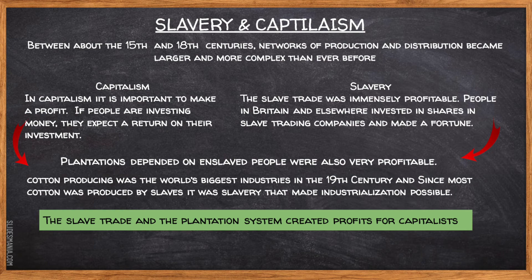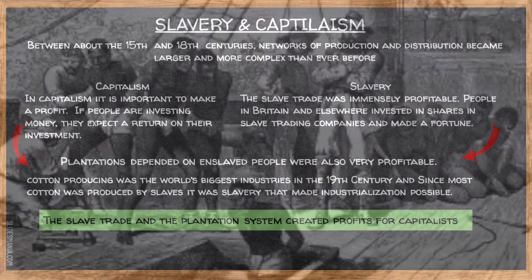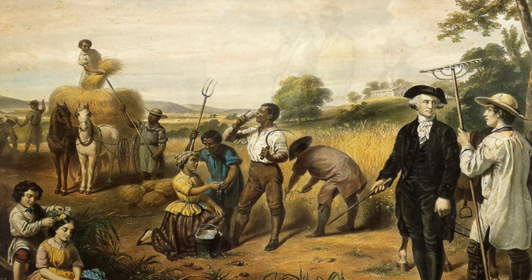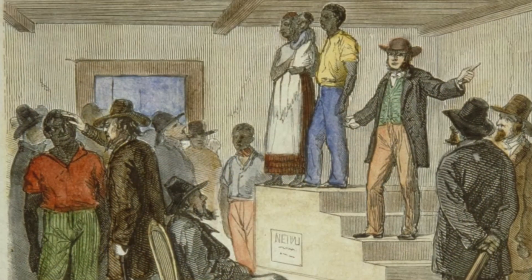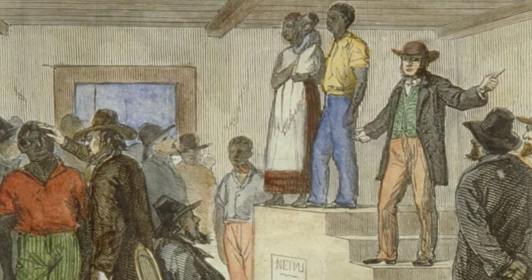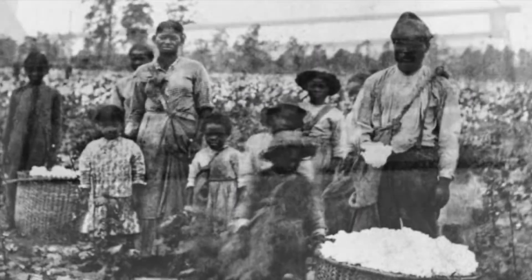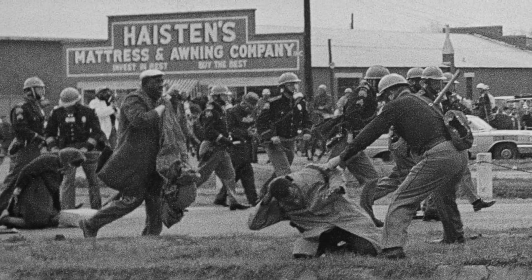Therefore, the slave trade and the plantation system created profits for many capitalists around the world. Whatever their precise relationship, clearly slavery and capitalism existed together in the years that set the stage for the industrial and world economy we have today. Both contributed to the world we live in right now, and it's worth discussing and trying to understand how capitalism and slavery shaped our modern global economy.